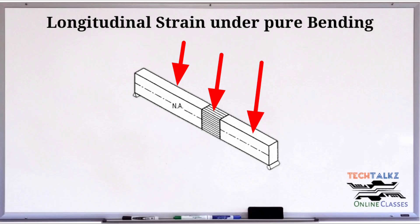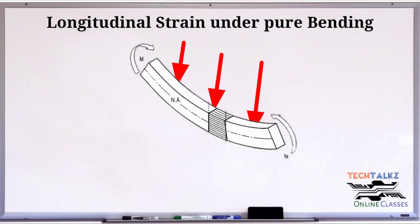Load on the beam can be concentrated or distributed. Anyway, it is acting on a beam, the beam tends to bend, deforming its axis into a curve.